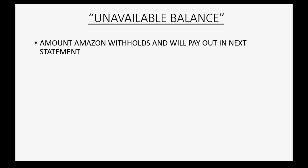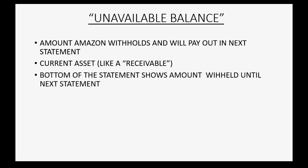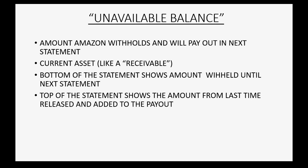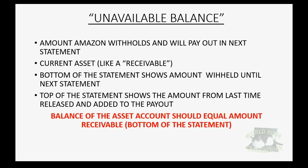What is the unavailable balance listed on your bi-monthly Amazon deposit statement? It's an amount that Amazon withholds and will pay you in the next statement. It is technically a current asset like a receivable because you will receive it in the future. The bottom of the statement shows the amount withheld until the next statement, and the top shows the amount from last time released and added to the payout on the current statement. The balance of the asset account should always equal the amount at the bottom of the most recent statement.